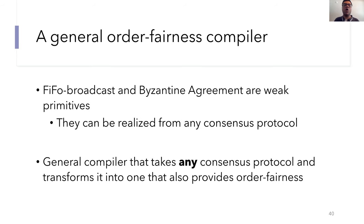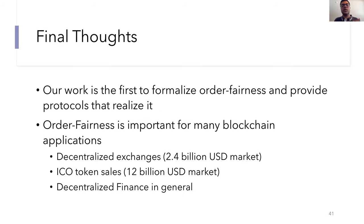Just to give some final concluding thoughts, our work is the first to formalize this order fairness notion and provide protocols to realize it. And we think order fairness is an important property for many decentralized blockchain applications. I mentioned decentralized exchanges earlier, which is a $2.4 billion market in 2019. Another important use case is that of ICOs or initial coin offerings, which could benefit from first in first out ordering for fair investing. This is a $12 billion market. In general, we think that decentralized finance or DeFi applications should also benefit from this notion of fair ordering.